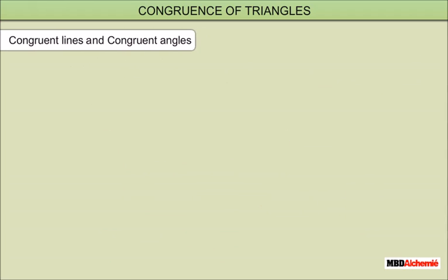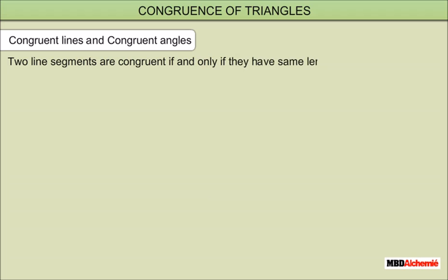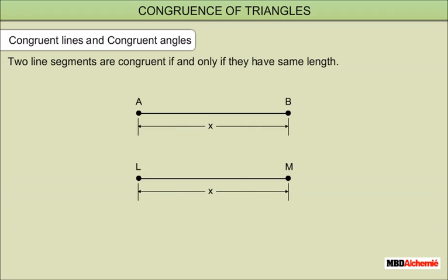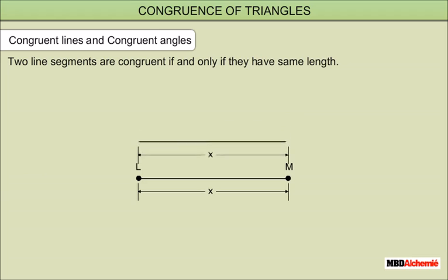Congruent lines and congruent angles: Two line segments are congruent if and only if they have the same length. For example, lines AB and LM both have equal length and they superimpose each other.